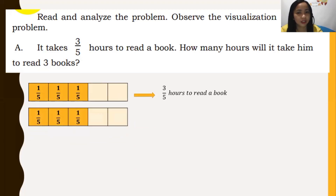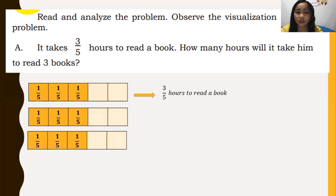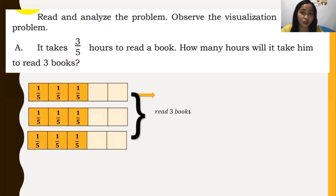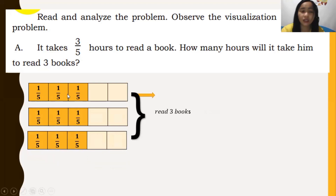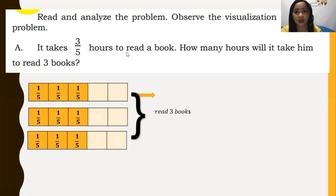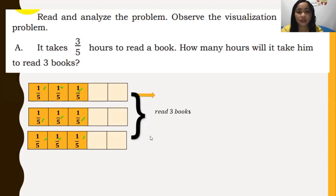Now, if you are going to read three books: this illustration is for the second book and this is for the third book. To get our answer, we combine them. Look at the shaded portions — these represent the time consumed reading the books. When we combine them, how many shaded portions do we have? We have one, two, three, four, five, six, seven, eight, nine shaded portions.